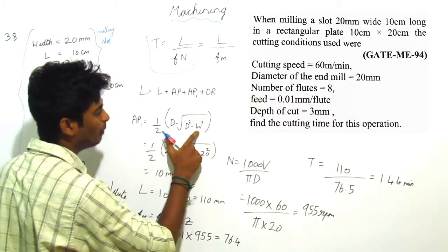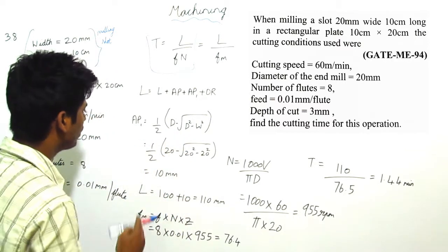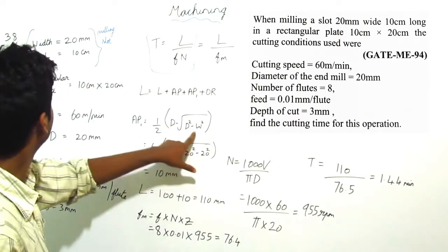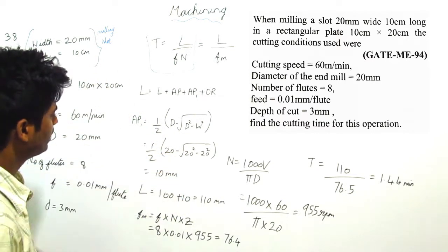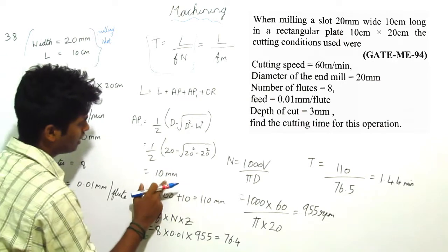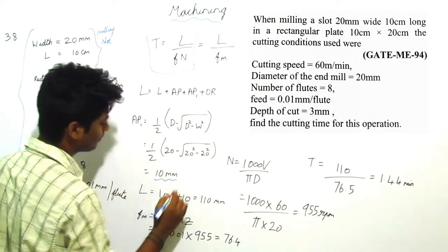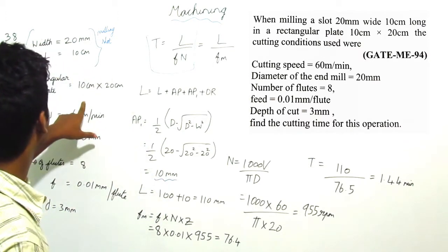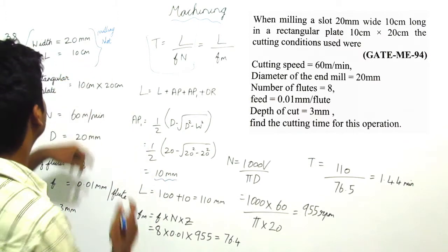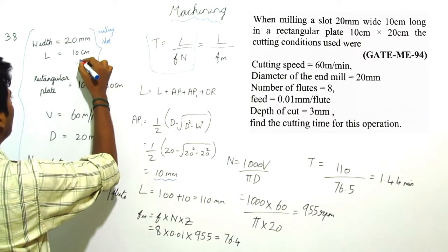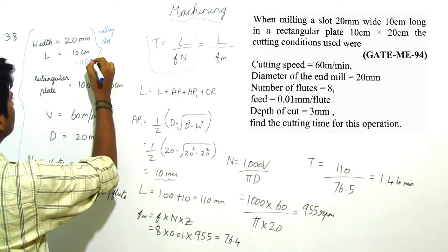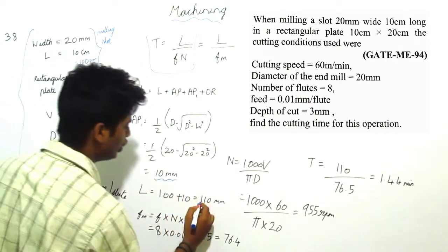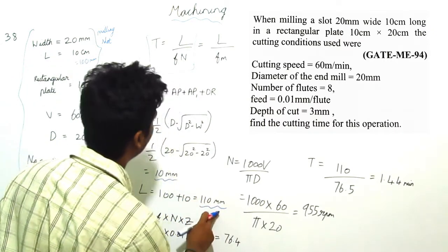D is diameter, W is width. So half into diameter is 20 and width is 20 mm. Substituting those values we are getting a1 as 10 mm. So total length is 100 mm, that is 10 cm, plus a1 value. Total length is 110 mm.